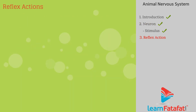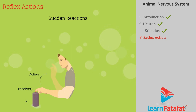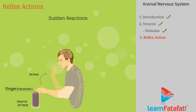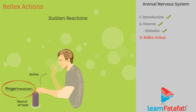Some reactions are so sudden that they happen without our knowledge. Such sudden actions are called reflex actions. For example, if any hot object is accidentally touched, then immediately our hand gets pulled back.